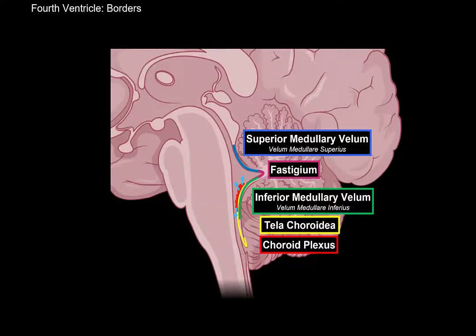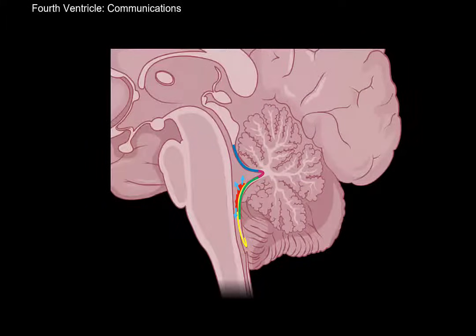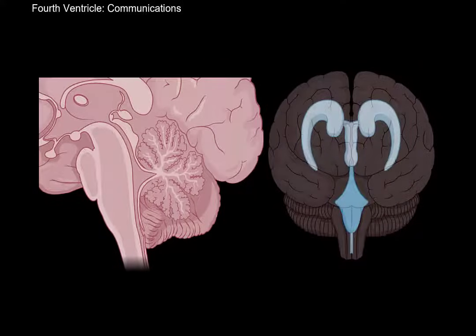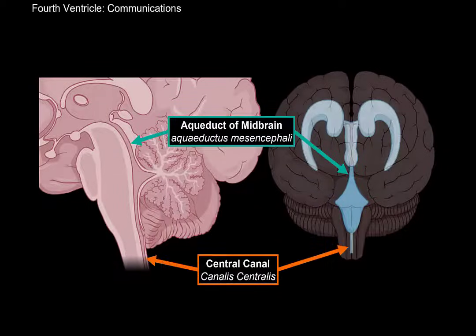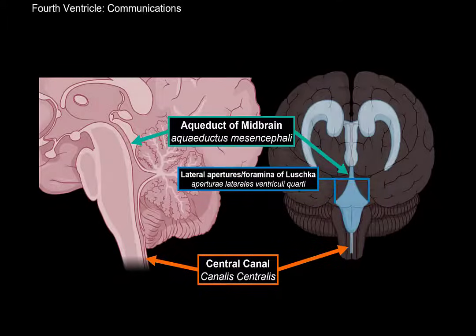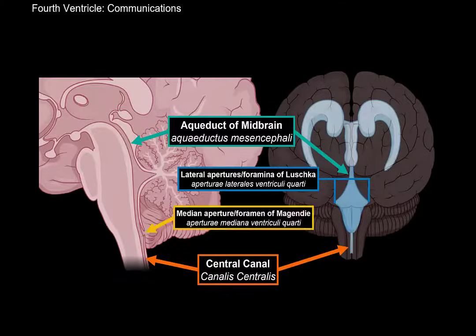Now let's go through the communications of the fourth ventricle from two perspectives. The fourth ventricle communicates with the third ventricle through the aqueduct of the midbrain and continues downwards as the central canal within the spinal cord. Laterally, there are two apertures called the lateral apertures, or foramen of Luschka, which open into the subarachnoid space. There is also the median aperture, also referred to as the foramen of Magendie. All of these apertures open into the subarachnoid space to provide flow for cerebrospinal fluid.